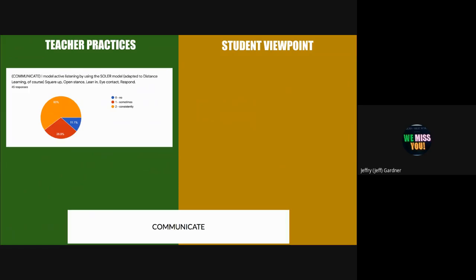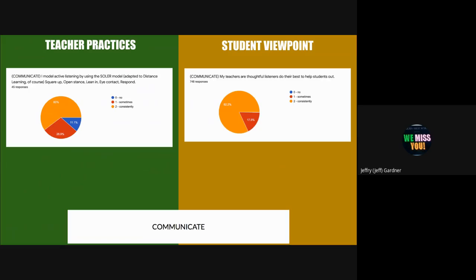Next one is I model active listening by using the solar model. If you remember that, it's about squaring up. So that'd be looking into the camera, open stance. I don't know how that would look in a camera situation since we kind of just see our faces. Leaning in. I know that some teachers do that when they launch. They like to lean in or make emphasis. You want to do that when you're listening to students also. And then eye contact and then obviously a response. And the kids feel like we're doing a fantastic job. So keep up the good work.